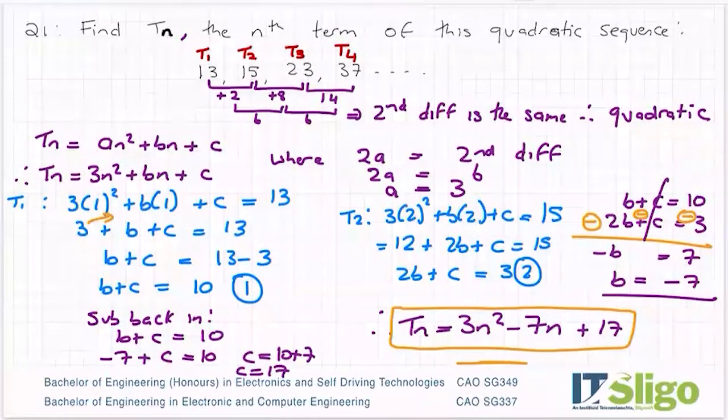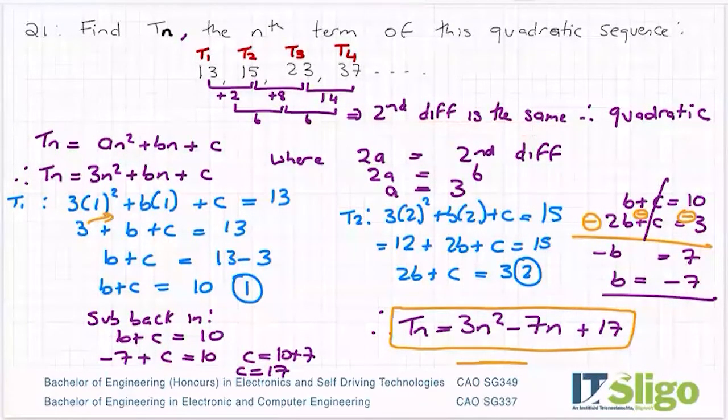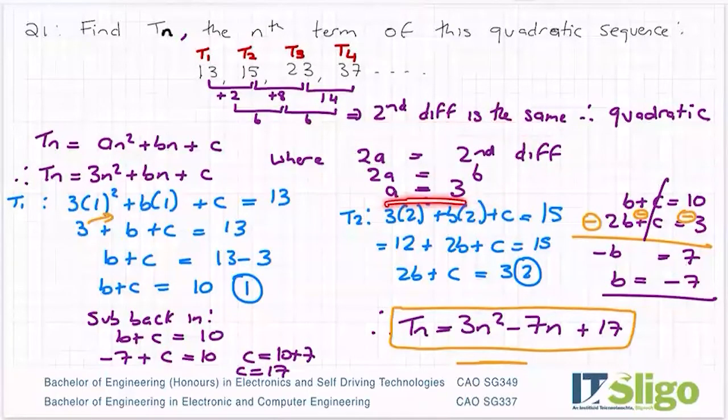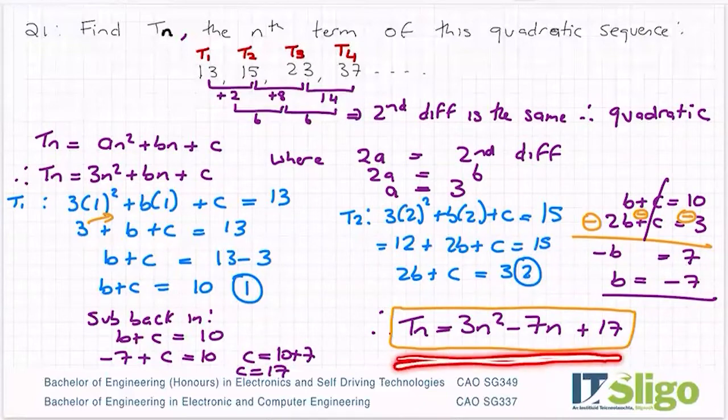So the theory: show that it's a quadratic sequence, in other words find the second difference. Let 2a equal to that second difference and find your a term. Sub that a term into the general term an² + bn + c. Set up two simultaneous equations and solve them for b and c. And finally, put this back into the Tn formula.